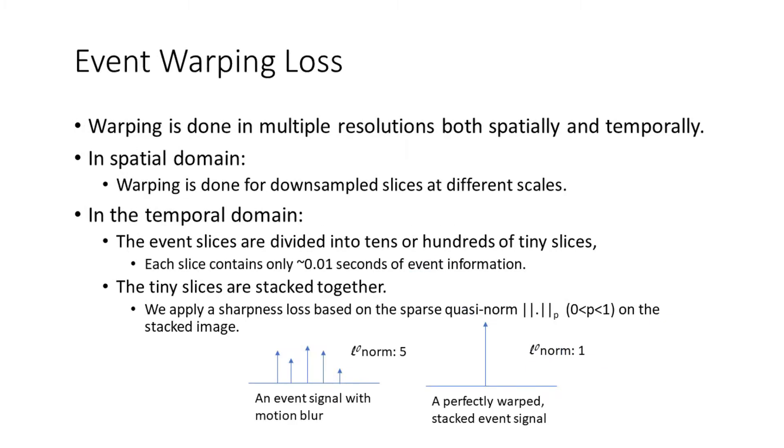In computing the loss function, we take advantage of the accurate time information. We warp events at two resolutions. First, for coarse alignment, we warp neighboring slices of 0.2 seconds.